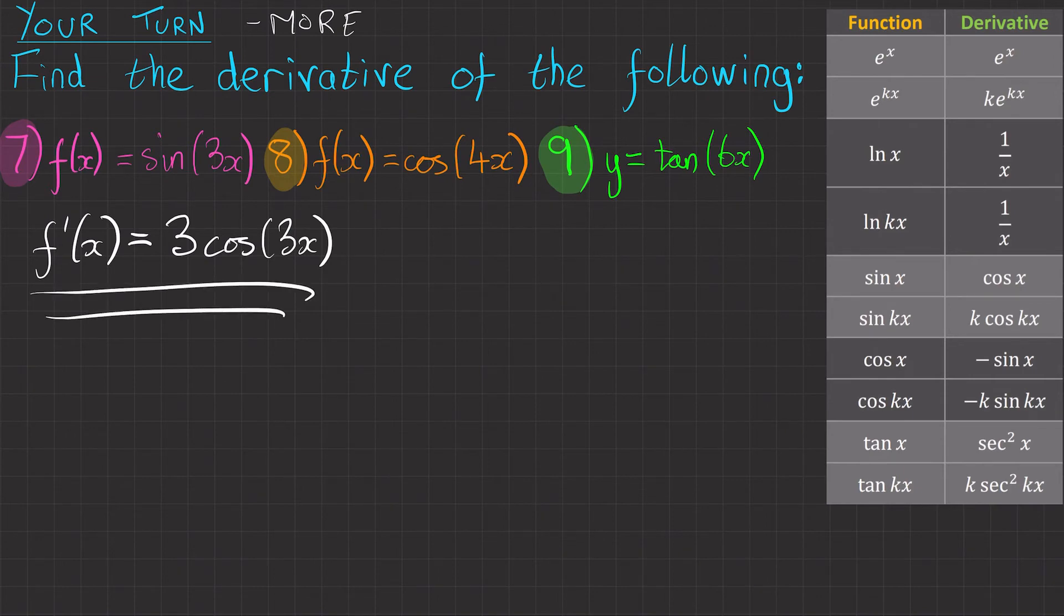Question eight, we've got f of x equals cos 4x. So f dash x equals, looking down the table, here are the cos functions. We want this one because we've got a constant.